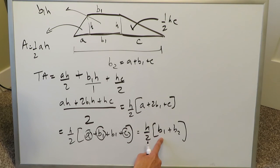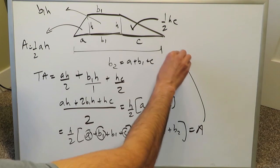Half times height times base 1 plus base 2, the sum of these two bases times half times the height, giving you the area of the irregular trapezoid that you see over here.